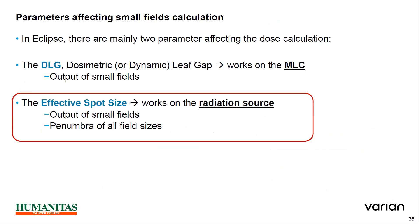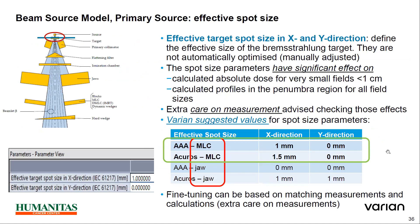Another parameter which affects small fields is the effective spot size. The effective target spot size is specified in two directions in the treatment planning system administration: x and y. As per recommendations, we usually write for 6MV 6MV around 1 mm for x, and 0 for the y-direction. For HDMLC, it's around 1.5 and 0. These values are defined with the MLC or usually defined with the jaws.